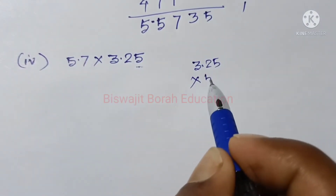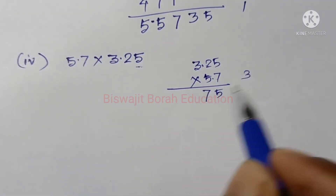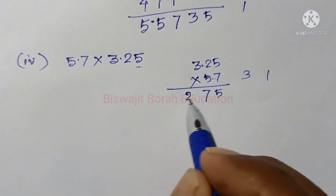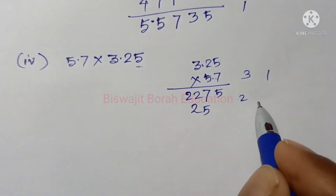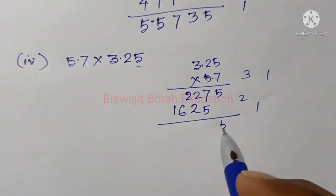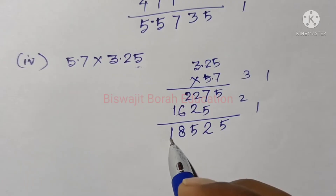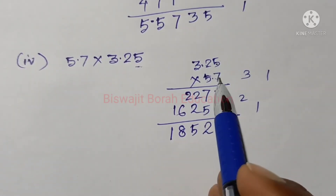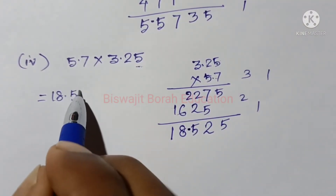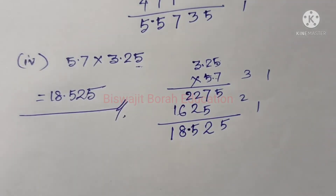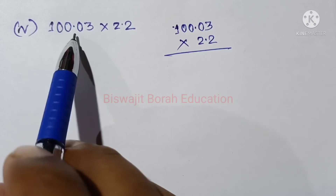We will have 7.5, 8.5, 9.5, 8.5 — and continuing with 8.5 values. Say hundred point zero three into two point two.